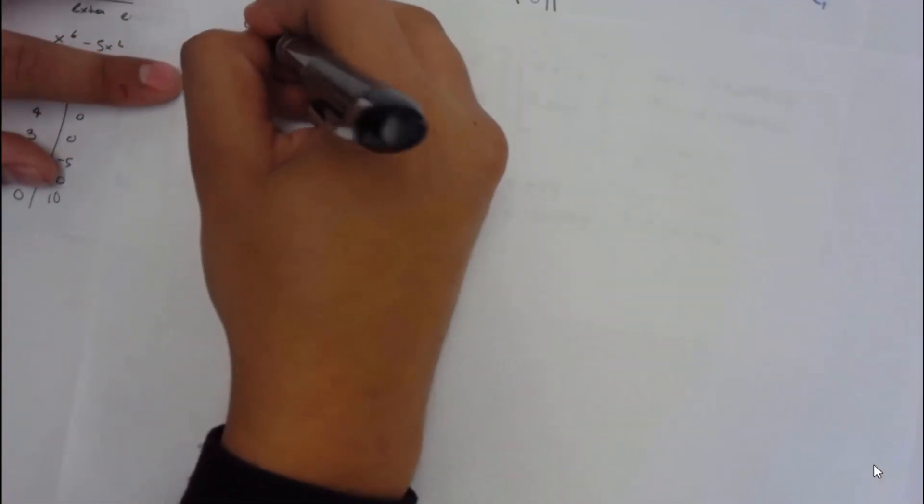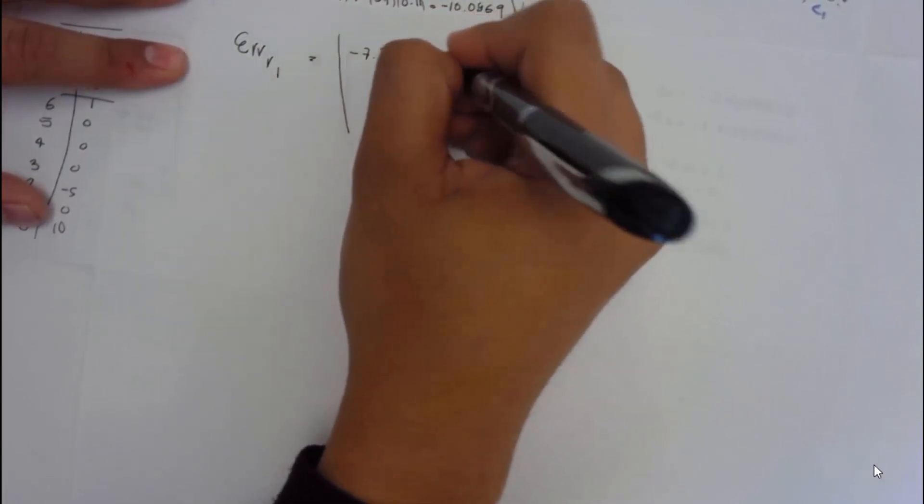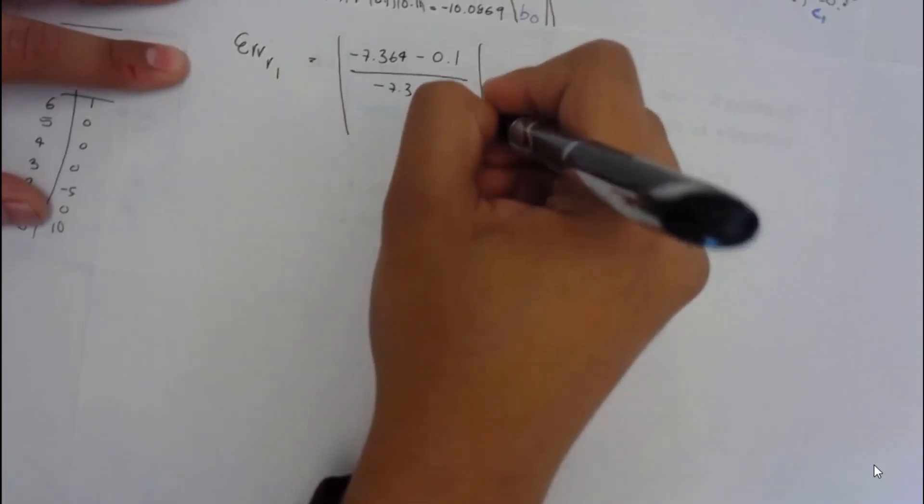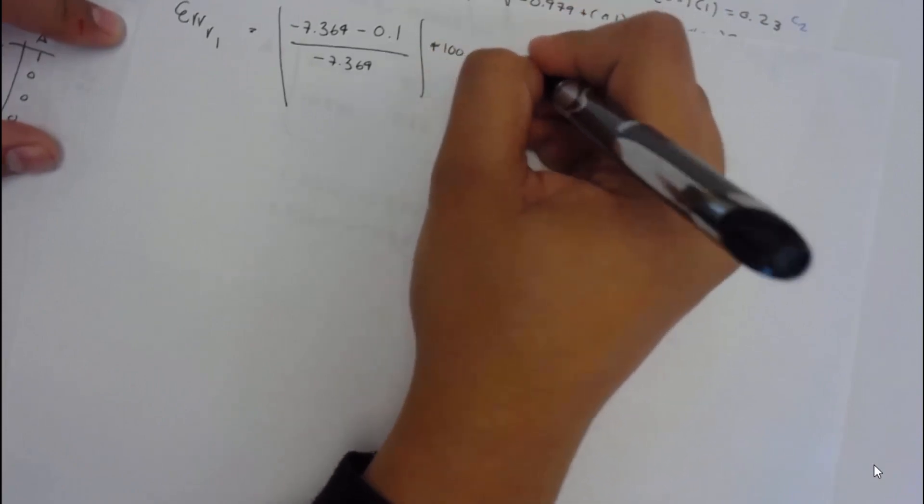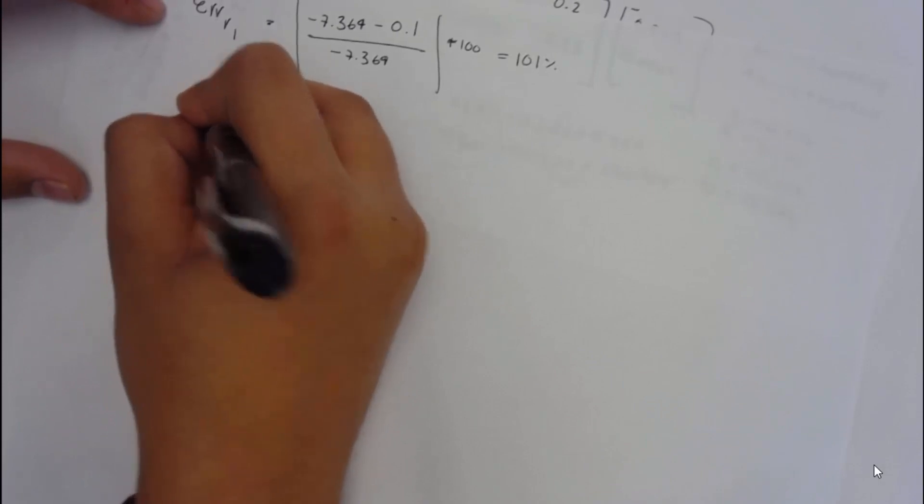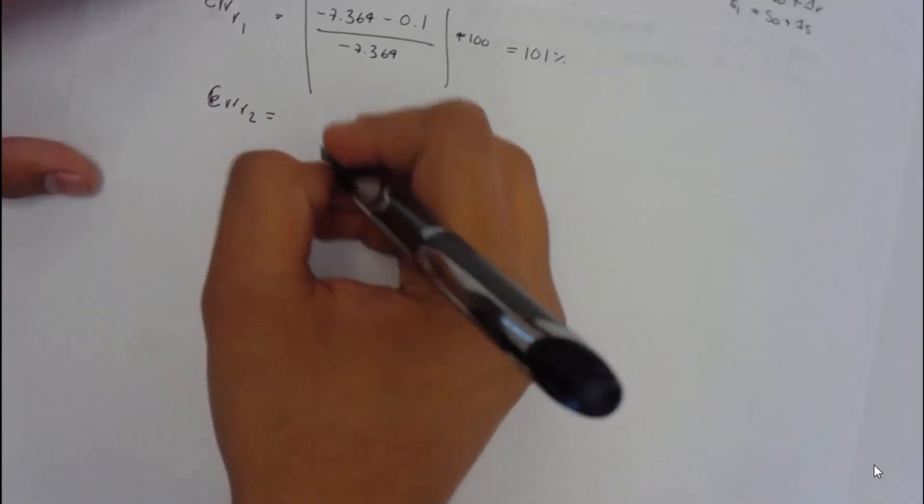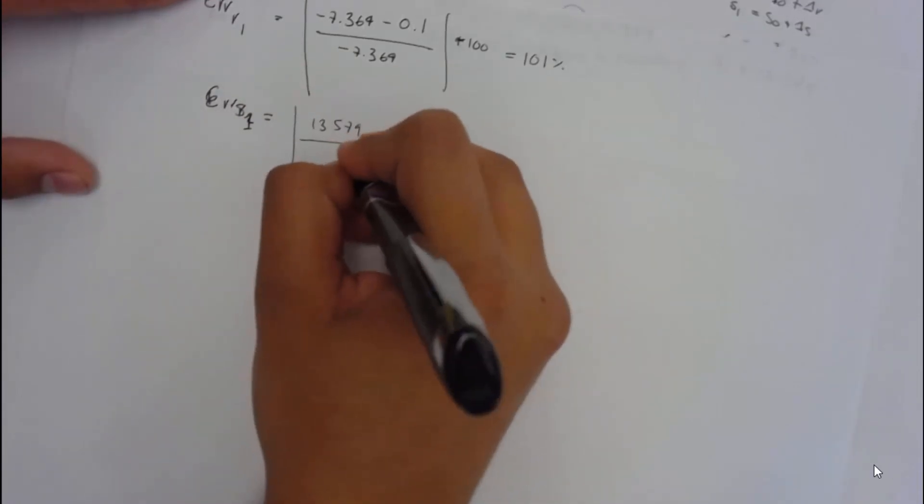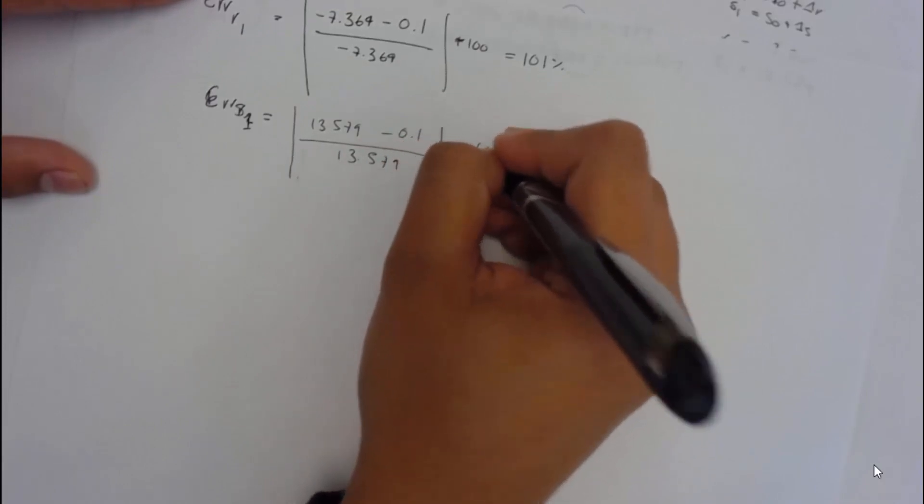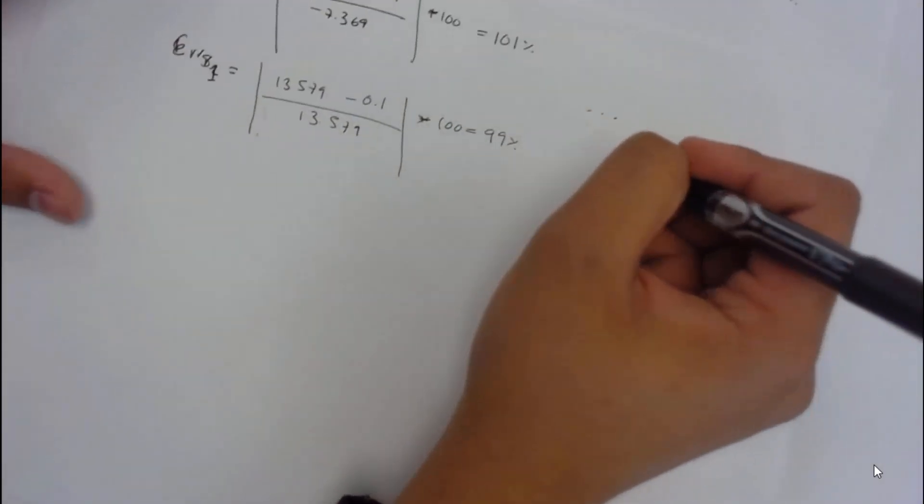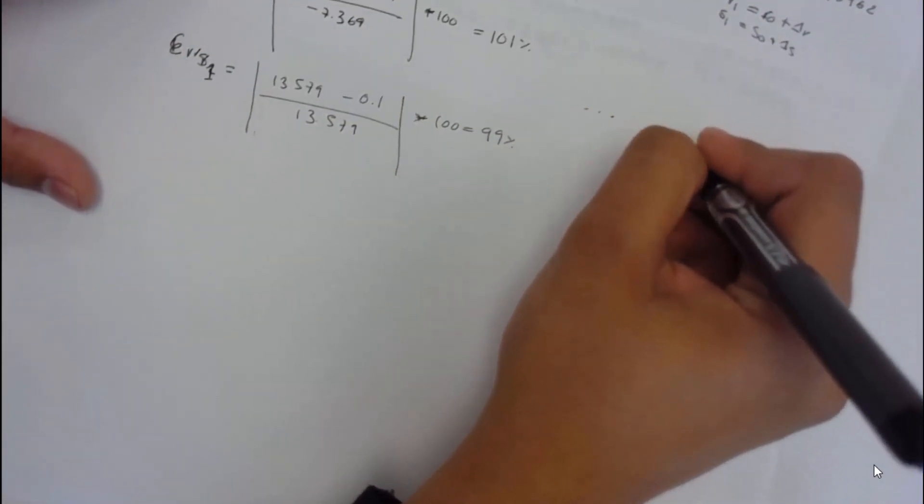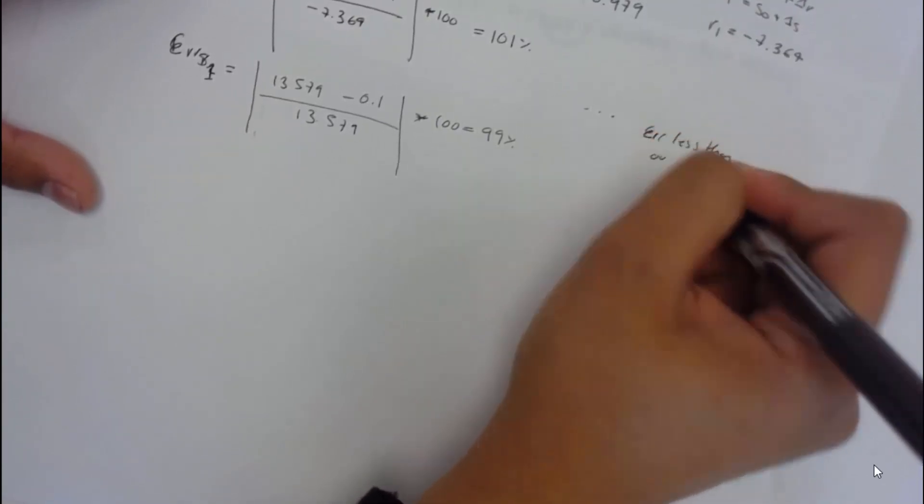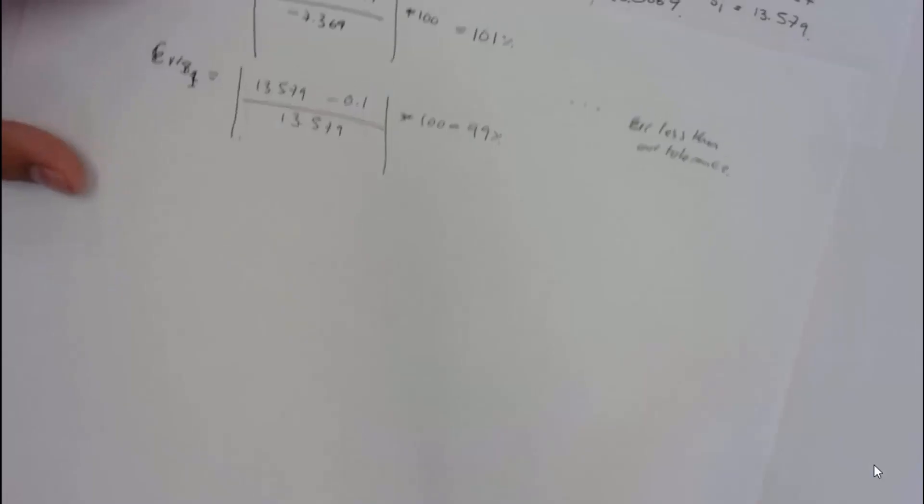Now, to do the errors, it's going to be as any other numerical method. The error of r1 would be the absolute value of our new value minus our old value over our new value, times 100, which for this case would be 101%. You can always have an error bigger than 100. And our error for s1 would be 13.579 minus 0.1 over 13.579, times 100, which would be equal to 99%. So, basically, we would have to keep iterating until we get an error that is less than our tolerance.